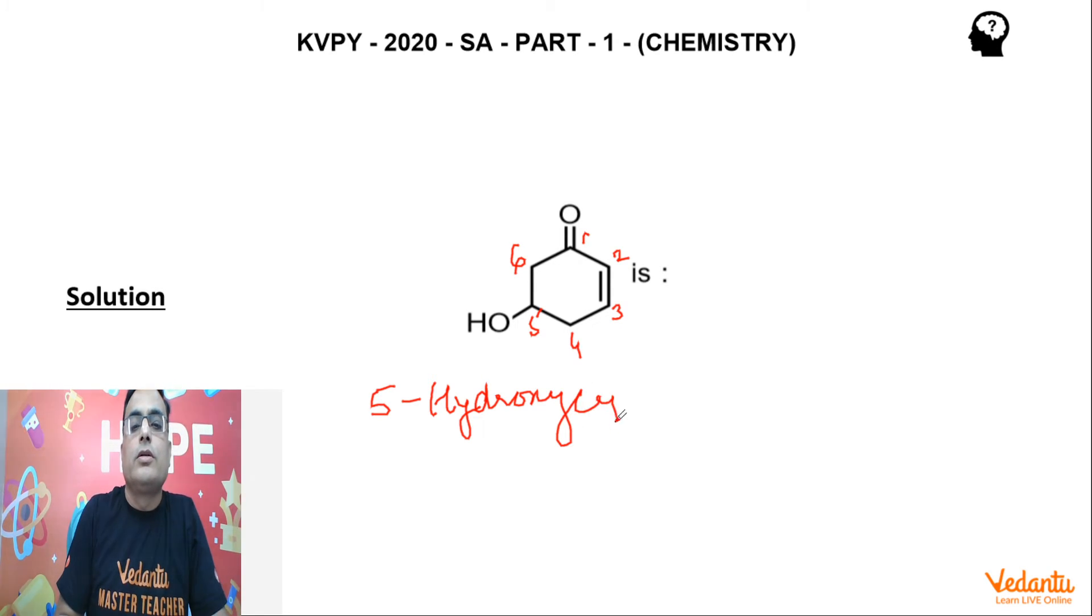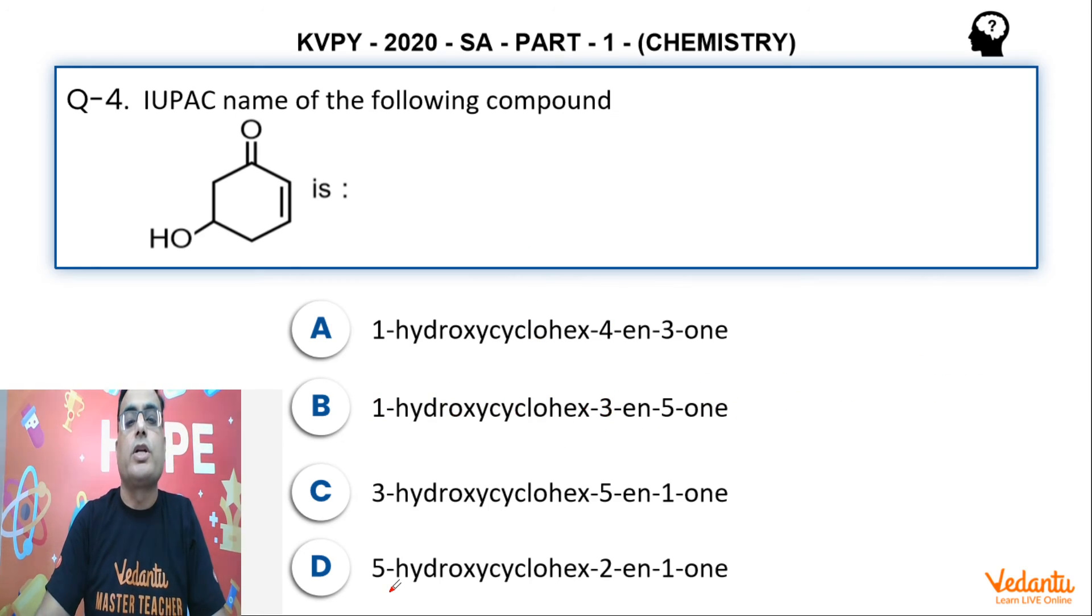5-hydroxycyclohex-2-en-1-one. This will be the name of this compound. Let us check. 5-hydroxycyclohex-2-en-1-one. This is the answer.